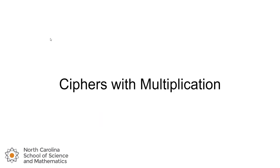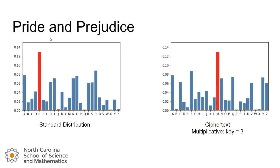This gets a little bit trickier when we're dealing with ciphers with multiplication. What we do with multiplication is that we lose that order preservation of the bars. Here's our standard distribution of characters, and here's a ciphertext created using Pride and Prejudice with a multiplicative key of 3.